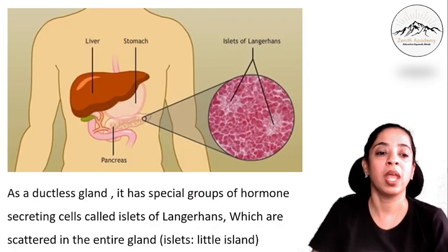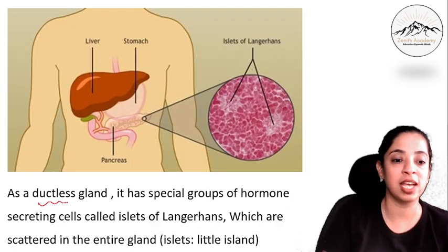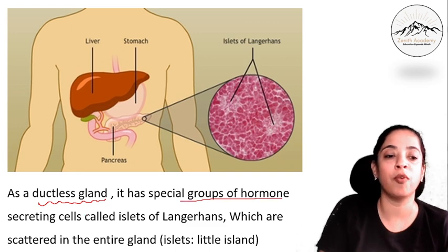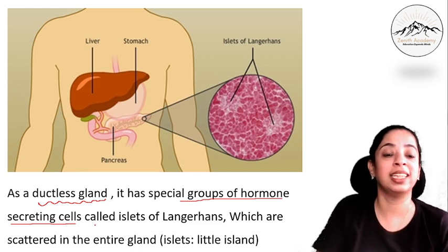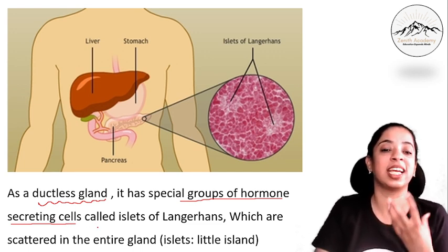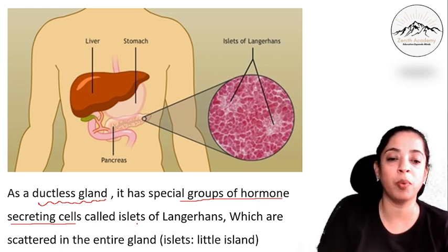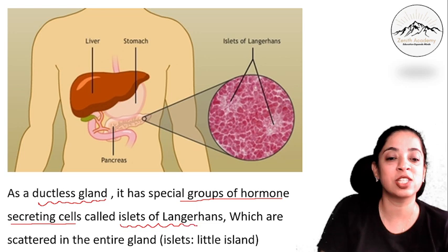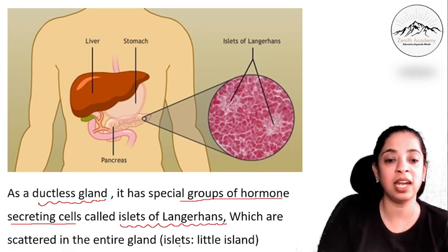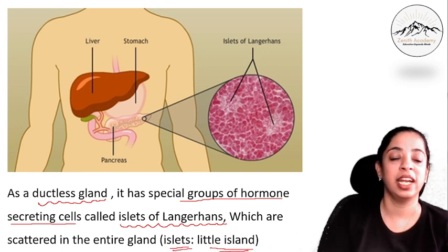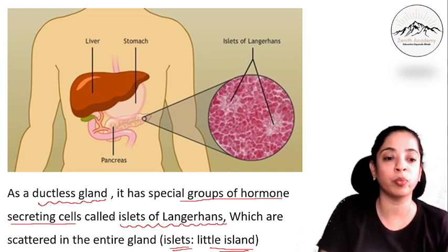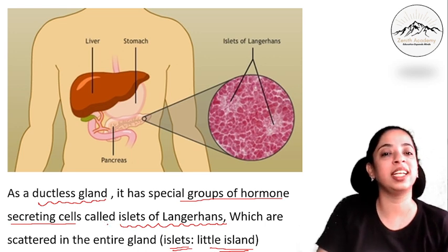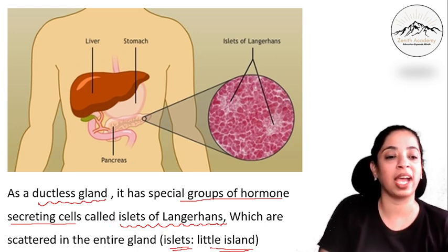As a ductless gland, the pancreas has a special group of hormone-secreting cells. These cells secrete hormones, and this group of hormone-secreting cells are called islets of Langerhans, which are scattered throughout the entire gland. The word 'islets' means little islands — it looks like little islands are present.